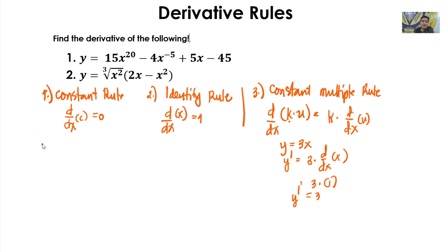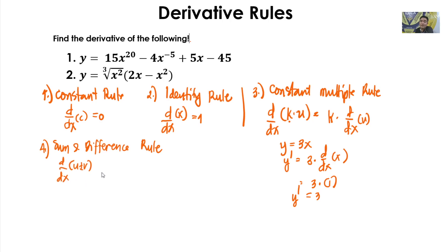Number four, we have the Sum and Difference Rule. It states that the derivative of u plus v with respect to x, where u and v are both differentiable functions of x, is simply the derivative of u with respect to x plus or minus the derivative of v with respect to x.